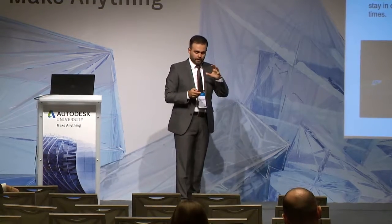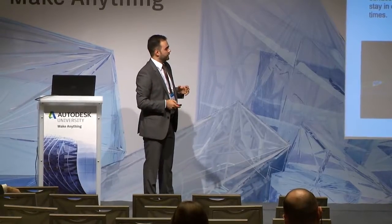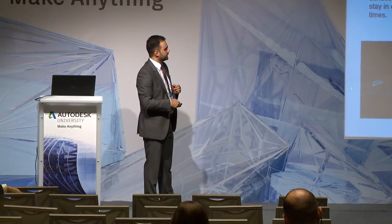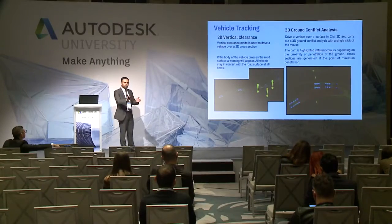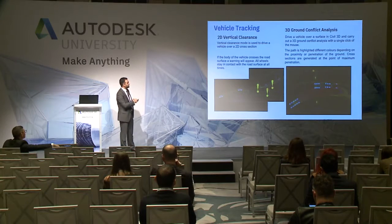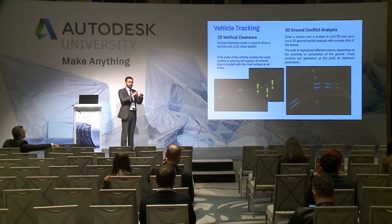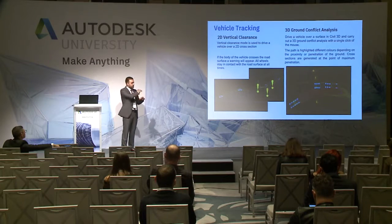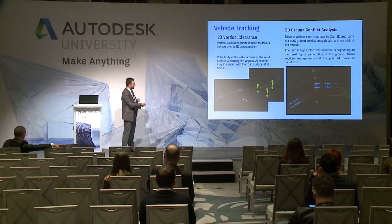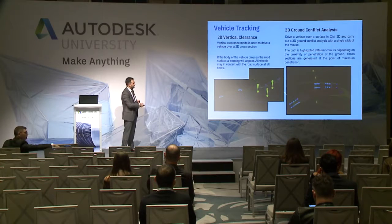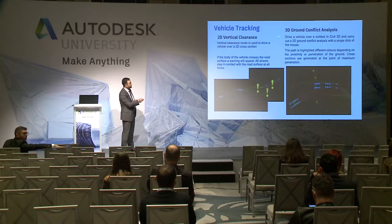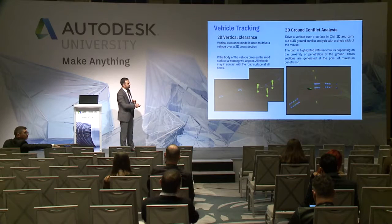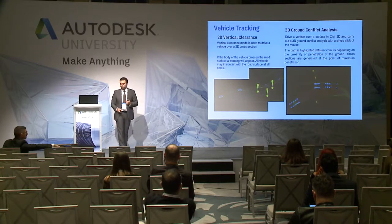The major power of Vehicle Tracking is not only simulating those movements, but also representing any possible clashes. We have 2D vertical clearance — you can take a profile and let the design vehicle of your choice go along that path, and the software will automatically highlight any possible problem areas. Or else, you can run a 3D ground conflict check to see any possible clashes.